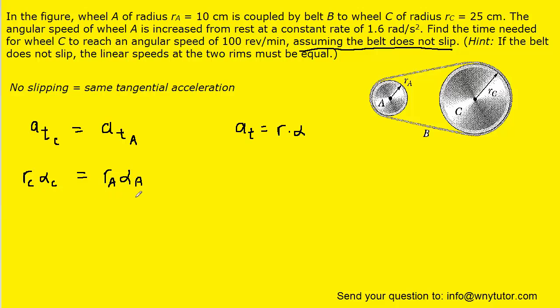Let's divide both sides by RC. And we can plug in the known values on the right hand side of the equation in order to solve for the angular acceleration of wheel C. Note that the question gives us the angular acceleration of wheel A to be 1.6 radians per second squared.